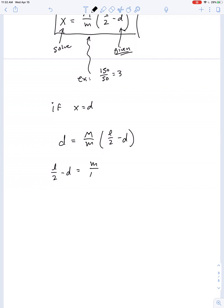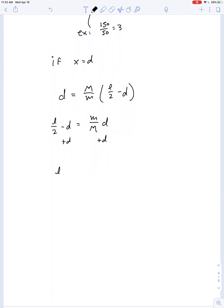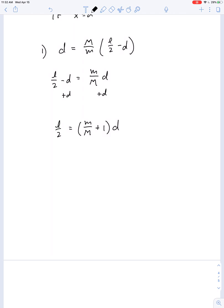So that just came from cross multiplying right? If we add D to both sides of the equation then we get L over 2 equals lowercase m over capital M plus 1 quantity times D. So as a final step, 1, 2, 3, 4, we can say D is equal to L divided by 2 times the quantity ratio of mass plus 1.